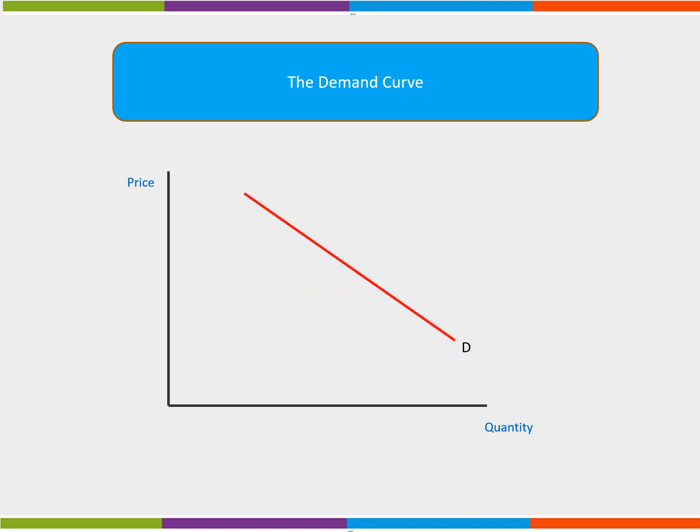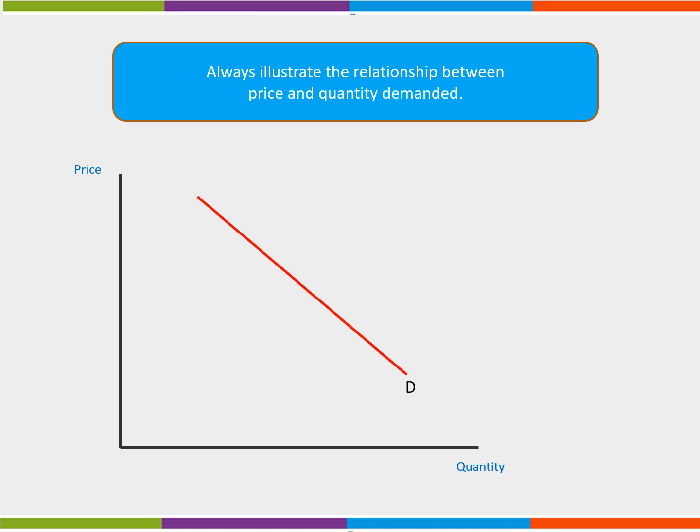We can see that as price falls, quantity demanded increases. To find the quantity demanded at any given price, firstly we select the price P. Then we draw a dotted line along to the demand curve. From there, we draw a dotted line down towards quantity demanded to find Q.